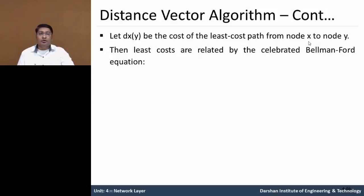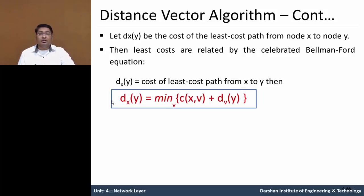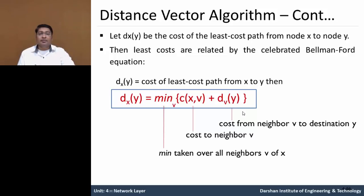Let us understand how it works. Let dx(y) be the cost of the least cost path from node x to y. The least cost is calculated by the Bellman-Ford equation. In this equation, dx(y) means the cost of the least path from x to y. Here, c(x, v) means the cost to neighbor v, and dv(y) is the cost from neighbor v to destination y.